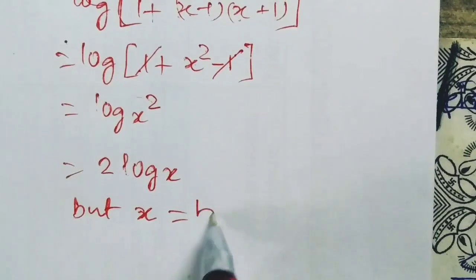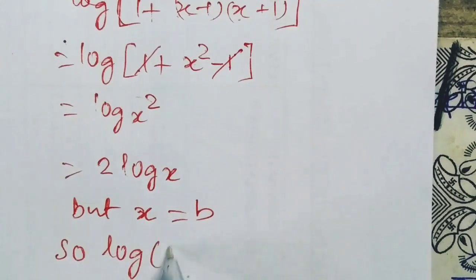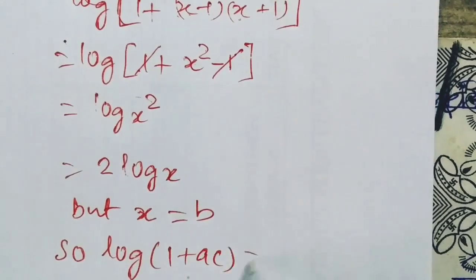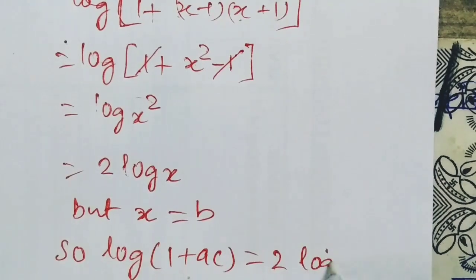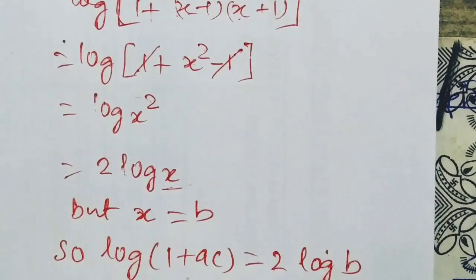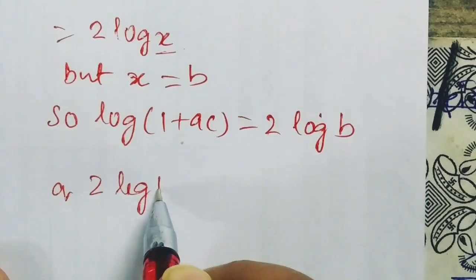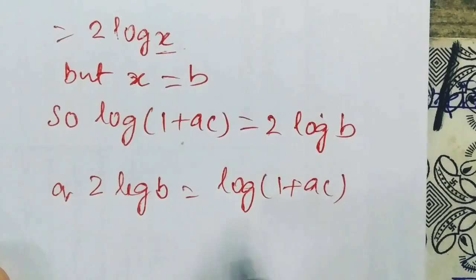Since x equals B, we have log(1 + AC) = 2 log B, or equivalently, 2 log B = log(1 + AC).